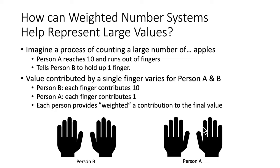So how can the weighted number systems help represent large values? Suppose two people were trying to count apples or something. Person A reaches 10, runs out of fingers. He says to person B, hey, hold up one finger. And then the process can continue. Person A can again reuse his 10 fingers to count the next 10. Now the value contributed by a single finger is going to vary for persons A and B. Person B, each finger contributes 10 towards the value. Person A, each finger contributes 1. Thus each person provides a weighted contribution to a final value.